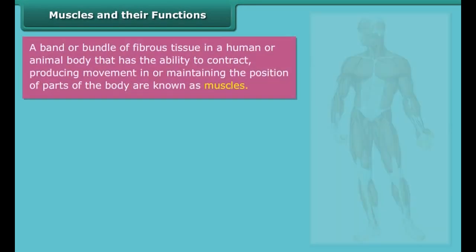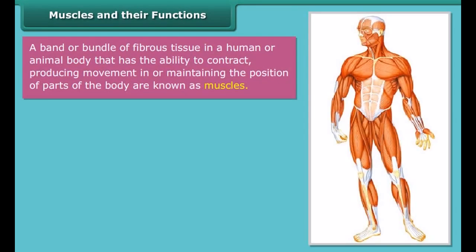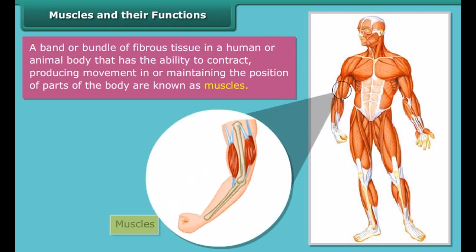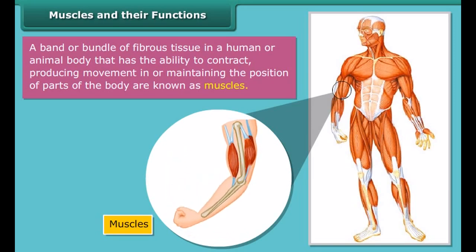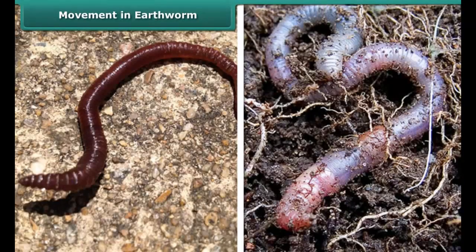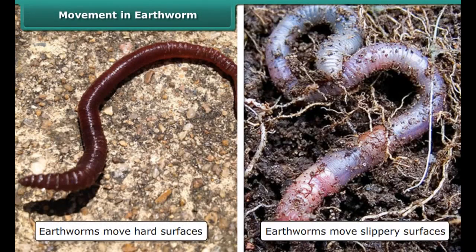Earthworms move easily on hard and slippery surfaces. They have tiny, stiff hair-like projections called bristles under their body, and they grab the soil with the help of these bristles. Earthworms first stretch and then contract their muscles to move. As a result, they cover only a small distance with every move. A slimy substance secreted by the earthworm helps it to move.